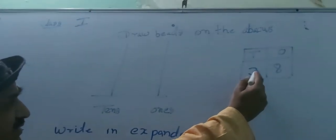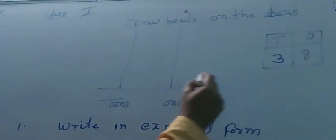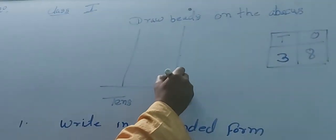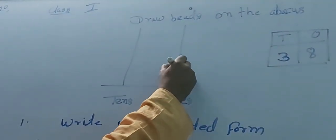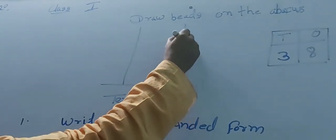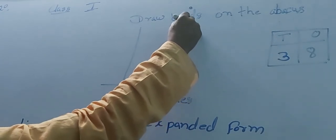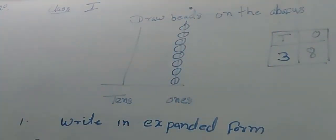Ones, tens. Once digit eight, tens digit three. So, once place eight. One, two, three, four, five, six, seven, eight. Understand? Eight. Once, eight.